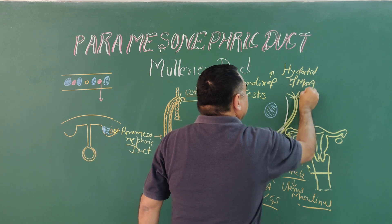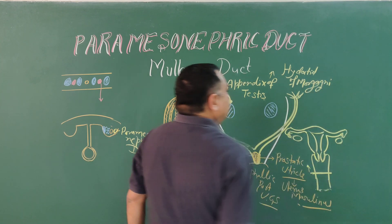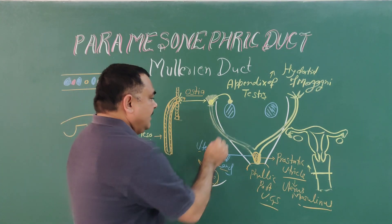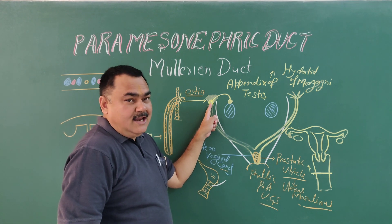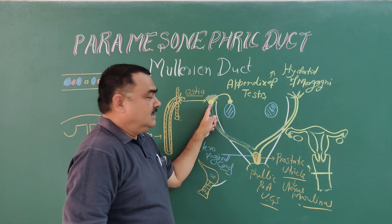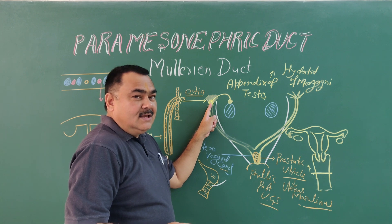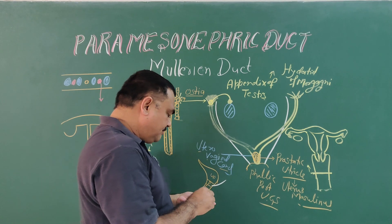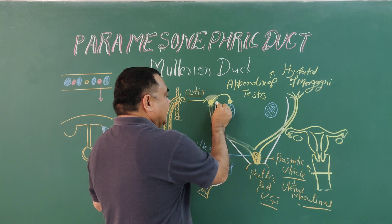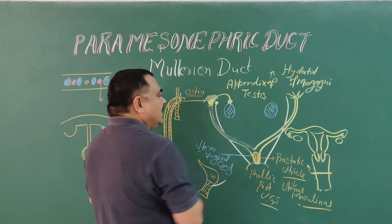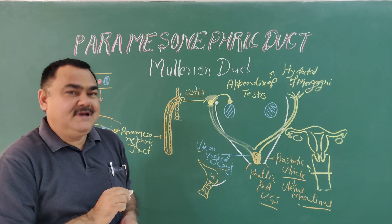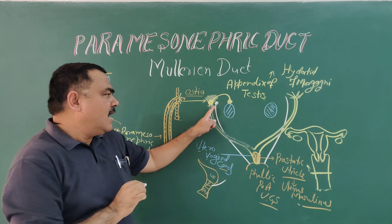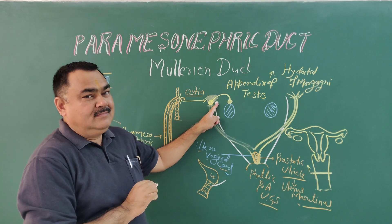So remember: appendix of testis is derived from the Müllerian duct. Regarding the mesonephric duct — the cranial-most part of the mesonephric duct, in male, forms the appendix of the epididymis. So appendix of epididymis is formed from the cranial-most part of the mesonephric duct.